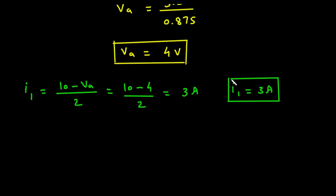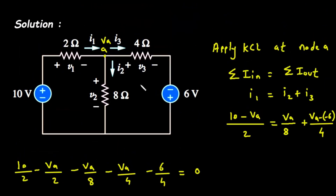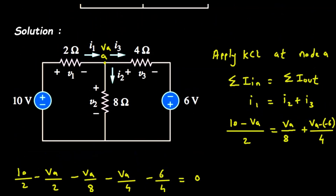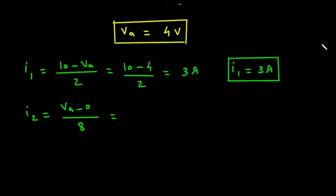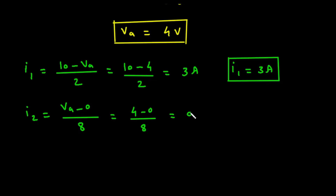Next, I2 = (VA − 0) / 8 = (4 − 0) / 8 = 4 / 8 = 0.5 amperes. Therefore I2 equals 0.5 amperes.